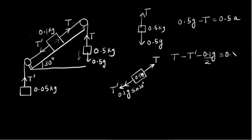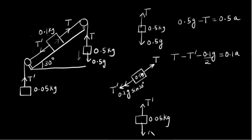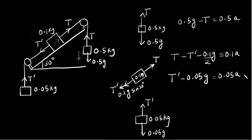Since we are assuming this block is moving down, this block will move upwards. So we have T minus T-dash minus 0.1g times one-half (since sine 30 is 1/2) is equal to 0.1 times a. The acceleration will be the same. Now for the 0.05 kg block, the free body diagram shows the upward force is T-dash and the downward force is 0.05g. Since it is going upwards, T-dash minus 0.05g equals 0.05a.